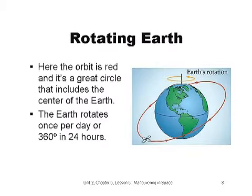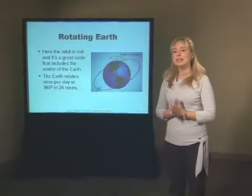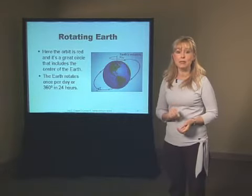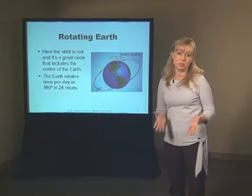Here the orbit is red, and it's a great circle as before. We've added the spacecraft to the orbit, and you can see the direction it will travel. The spacecraft will complete one low Earth orbit in about 90 minutes. It will complete about 16 orbits in one day, about 24 hours. This orbit is similar to those of the Space Shuttle and the International Space Station. Note that the Earth rotates once per day, or 360 degrees in 24 hours, meaning that the Earth rotates about its axis at a rate of about 15 degrees per hour.